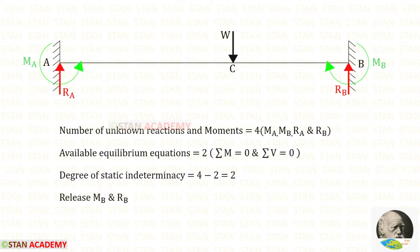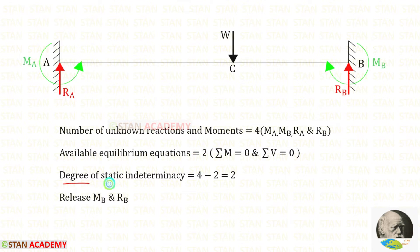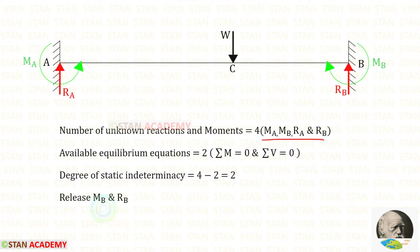Now let us find the degree of static indeterminacy. The number of unknown reactions and moments are 4: MA, RA, MB, and RB. The available equilibrium equations are 2. The degree of static indeterminacy is equal to 4 minus 2, which gives us 2. From these 4 unknowns, let us release MB and RB.